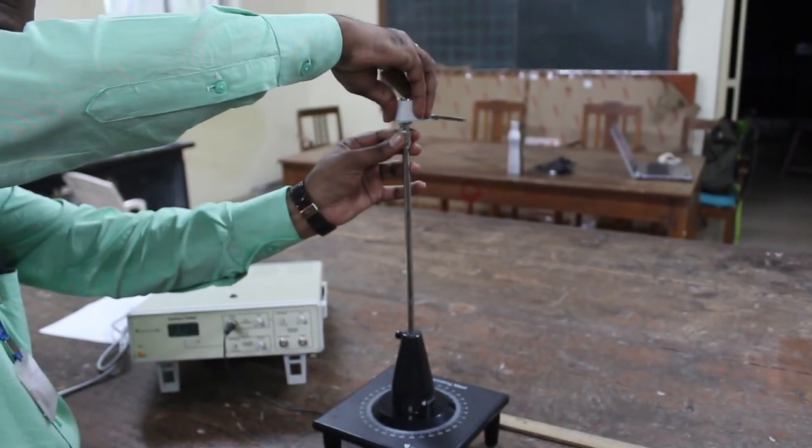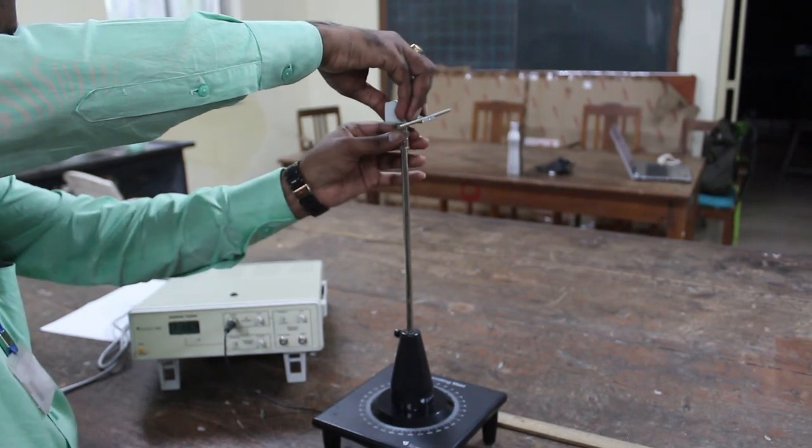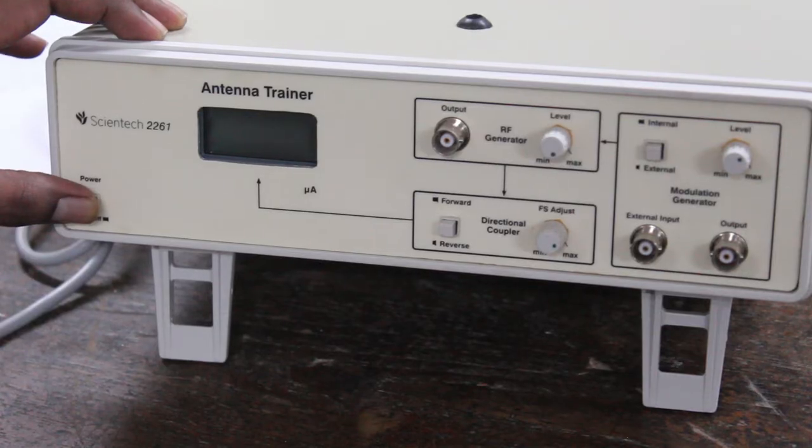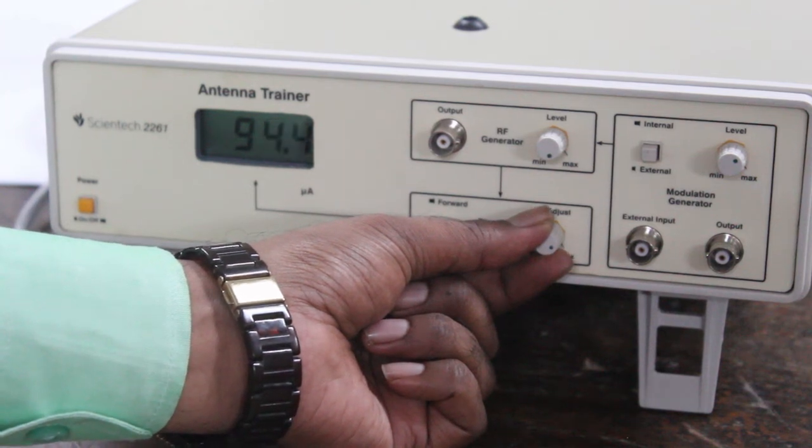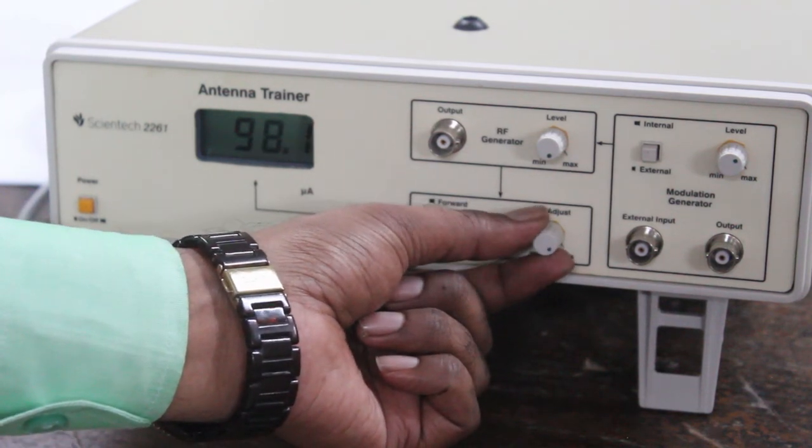Now let us attach the lambda by 2 antenna to the transmission mast. Now let us switch on the main unit and adjust the transmission power to 100 microamperes.